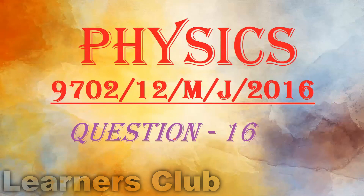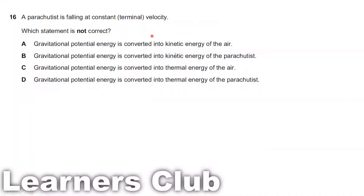Question 16. A parachute is falling at constant terminal velocity. Which statement is not correct? The parachute moves with constant velocity, so height is decreasing — there is a loss in potential energy. But kinetic energy remains the same because velocity is constant. Therefore, there is no gain in kinetic energy of the parachute.